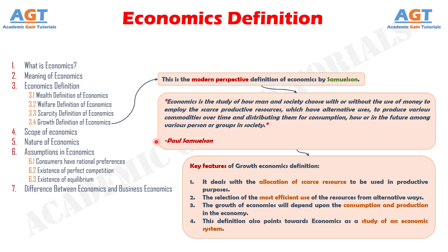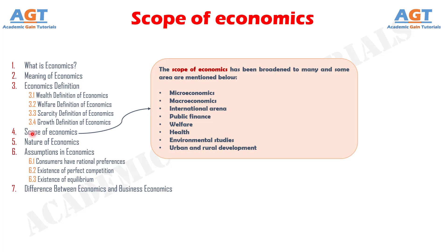As we can see, economics has different definitions by different economists and social thinkers with different objectives and contexts. All these definitions are correct and none can be taken as universally acceptable. The scope of economics has been broadened to many areas, some mentionable ones being: microeconomics, macroeconomics, international arena, public finance, welfare, health, environmental studies, and urban and rural development.